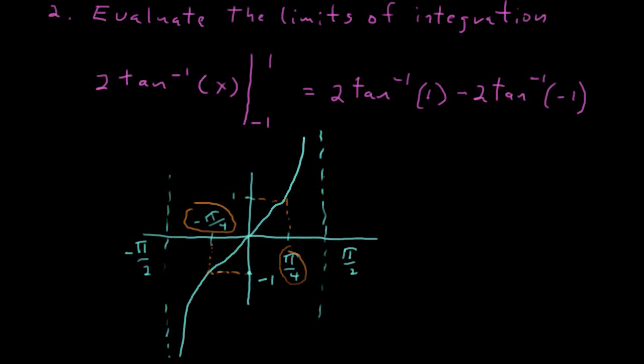So the inverse values then are, we'll just plug them in. Then we'll have 2, and the inverse tangent of 1, we found, was pi over 4. And then subtract 2, and the inverse tangent of negative 1, we found, was negative pi over 4.